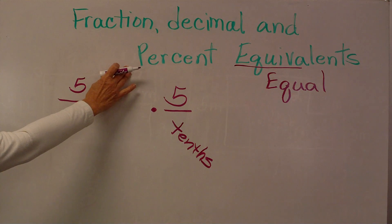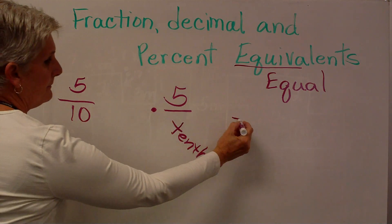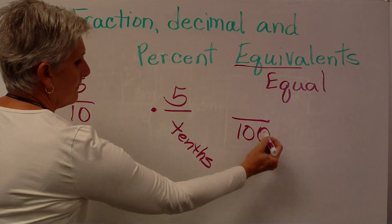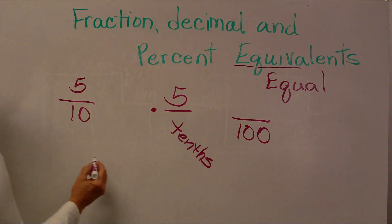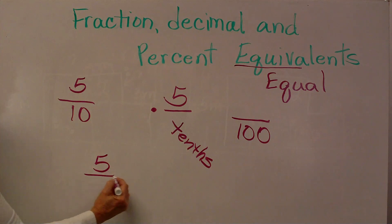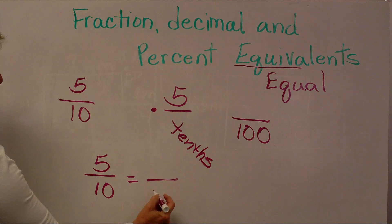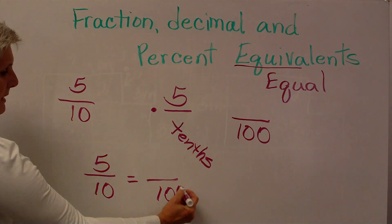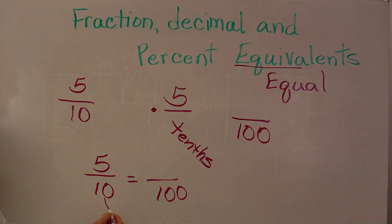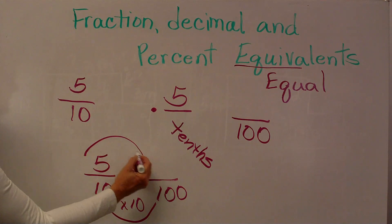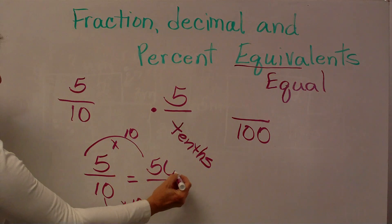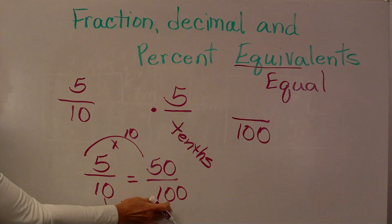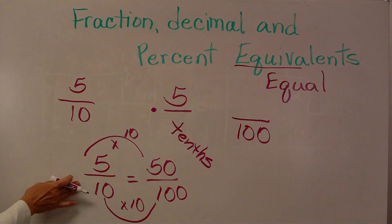Percent means out of a hundred. As a fraction, I can take 5 tenths and make an equivalent fraction of something over a hundred by multiplying 10 times 10 and 5 times 10, and my numerator becomes 50. Fifty over a hundred is equal to 5 tenths.